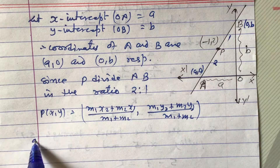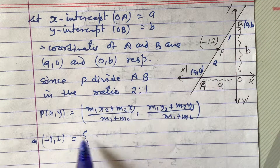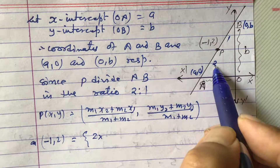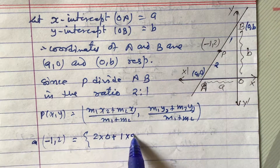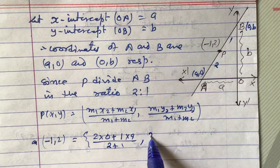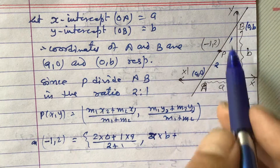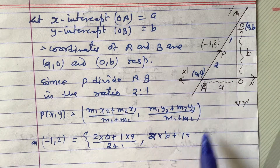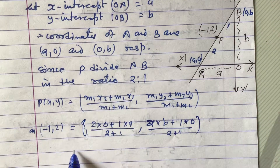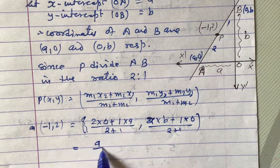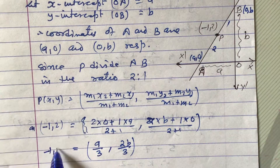Here P(x, y) is minus 1 comma 2. Substituting: x-component equals M1 times X2 plus M2 times X1 divided by M1 plus M2, which is 2 times 0 plus 1 times a divided by 3, giving a by 3. The y-component is M1 times Y2 plus M2 times Y1 divided by M1 plus M2, which is 2 times b plus 1 times 0 divided by 3, giving 2b by 3. So minus 1 comma 2 equals a by 3 comma 2b by 3.